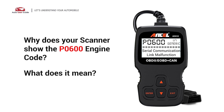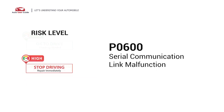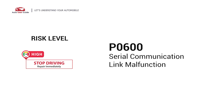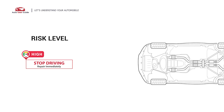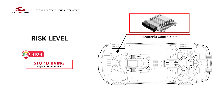Why does your scanner show the P0600 engine code? What does it mean? P0600 is a diagnostic trouble code for serial communication link malfunction. It indicates a communication issue between the electronic control unit, ECU, and another control module.